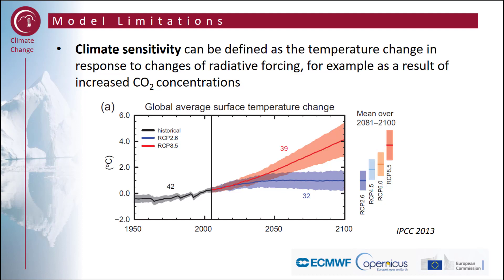This graph shows the uncertainty in future climate sensitivity. It shows future temperatures under RCP 2.6 — the blue line and range — and RCP 8.5 — the red line and range. The dark lines show the average.